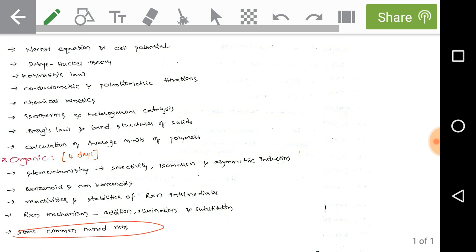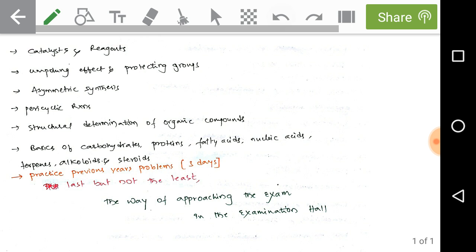Some common named reactions. Here we have many named reactions. To get some selected reactions please check the previous papers of CSIR and GATE chemistry so you can get an idea about the named reactions which are given frequently in the examination. Next, catalysts and reagents, umpolung effect and protecting groups, asymmetric synthesis. We have different kinds of asymmetric synthesis types, that means asymmetric control synthesis. Please check them. Pericyclic reactions.